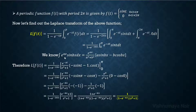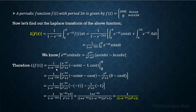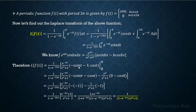We know that the integral of e raised to ax sin bx dx equals e raised to ax over (a squared plus b squared) times (a sin bx minus b cos bx). Comparing, we get a equal to minus s and b equal to 1. Therefore, Laplace of f of t equals 1 over (1 minus e raised to minus 2πs) times e raised to minus st over (s squared plus 1) times (minus s sin t minus cos t), evaluated within the limits 0 to π.